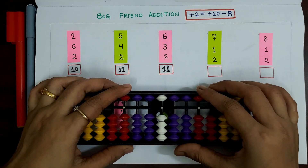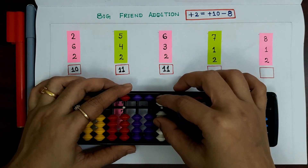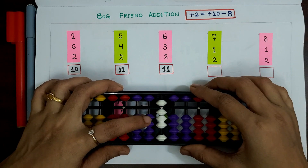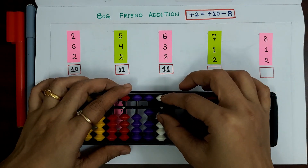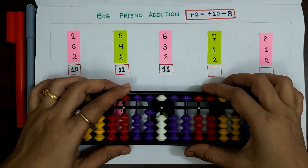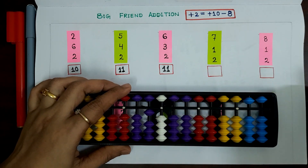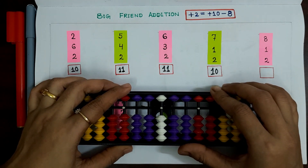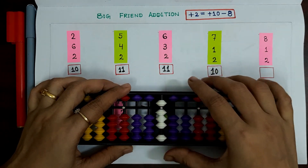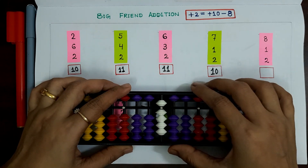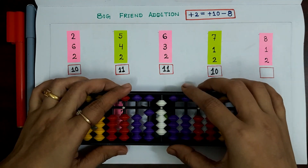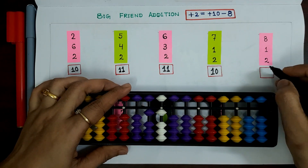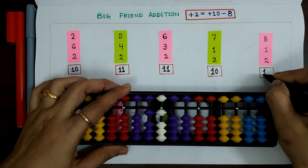Next example: 7 plus 1 plus 2. Apply plus 10 minus 8. Answer is 10. Next example: 8 plus 1 plus 2. Apply plus 10 minus 8. Answer is 11.